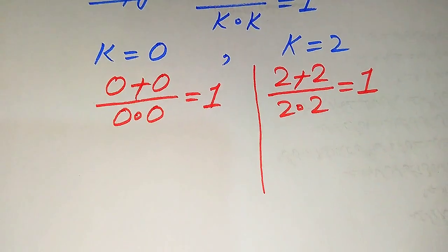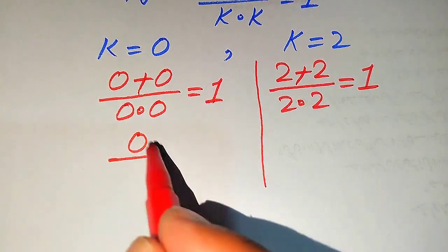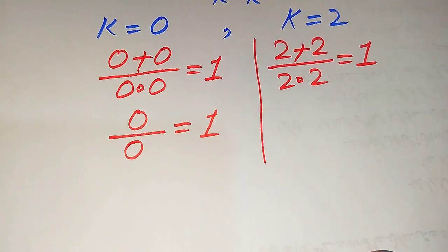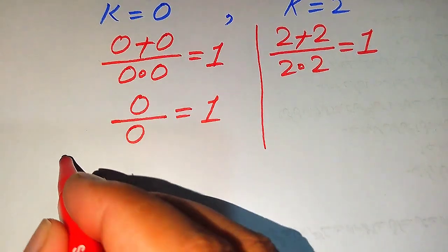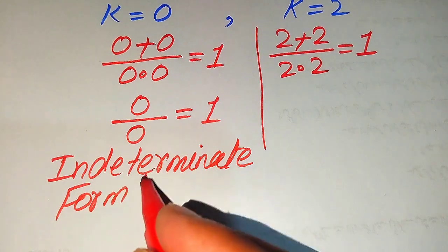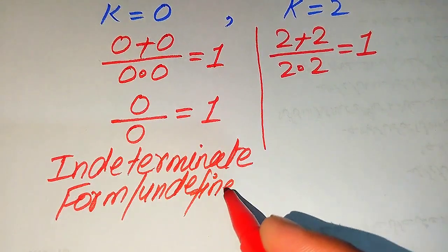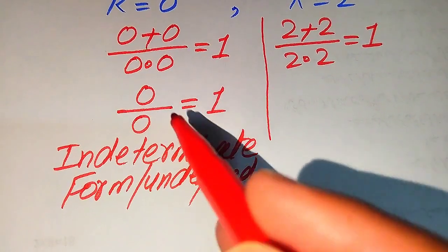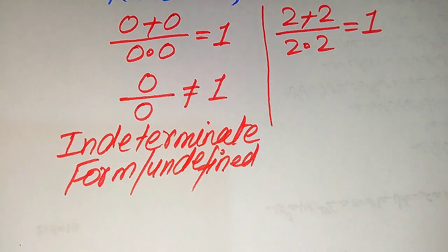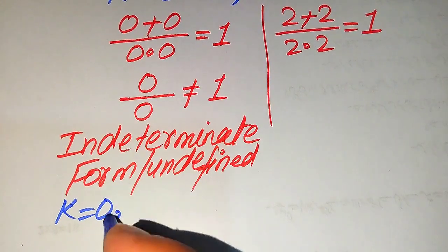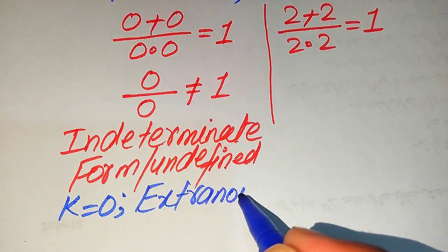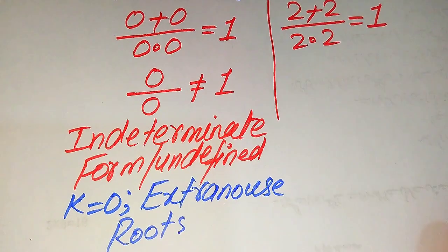For k equals 0: 0 plus 0 is 0 and 0 multiplied by 0 is 0, giving 0 divided by 0 equals 1. However, 0 divided by 0 is an indeterminate — or undefined — form. Since the left-hand side is undefined, it does not equal 1, so k equals 0 is an extraneous root of the given equation.